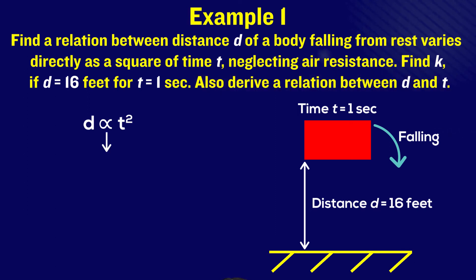The first step is to replace this proportional sign with the equal to sign and k, the constant of variation. Label this as equation one. Substitute the values of distance and time in it and we get k equals 16.